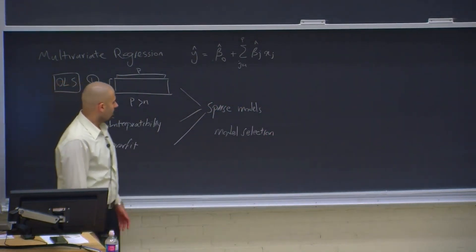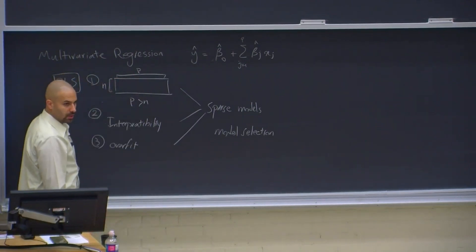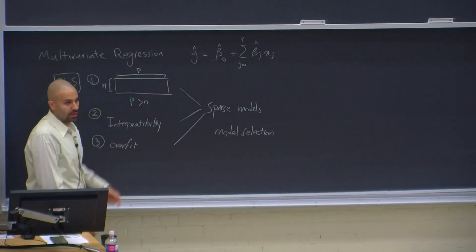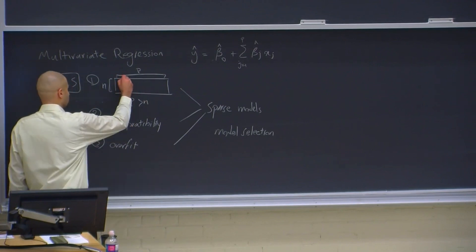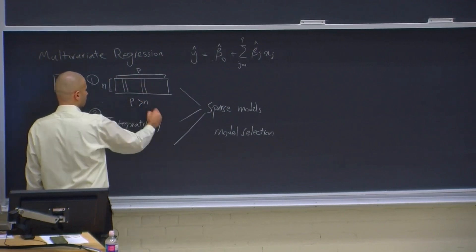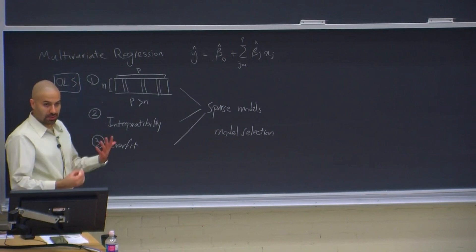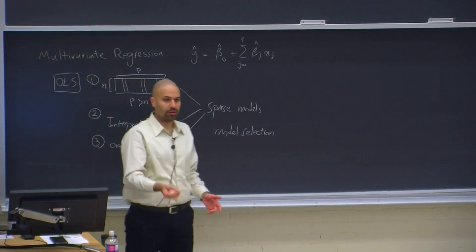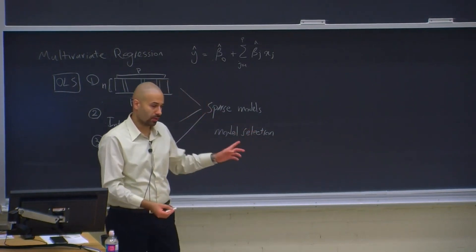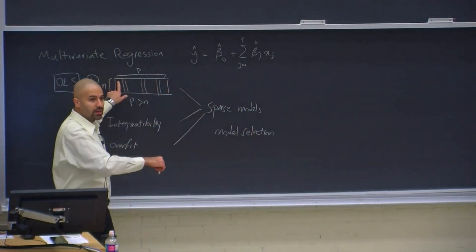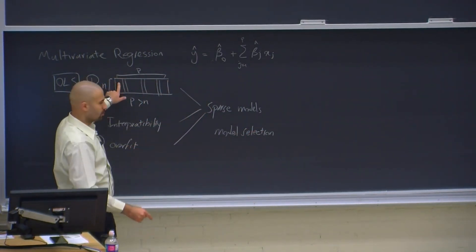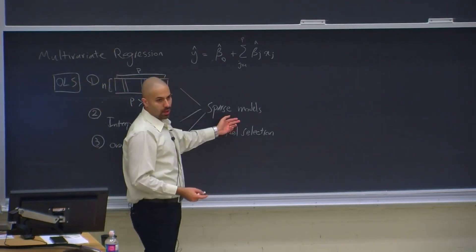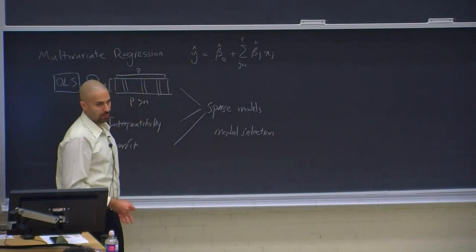Model selection means that when we have P predictors, there are many potential models we can use containing a subset of these predictors. If we use this predictor and this one and this one, we get a sparse model with three predictors. This is only one case out of two to the power of P possible models, because for each predictor it is either in or out — giving two possibilities per predictor and 2^P total possibilities.